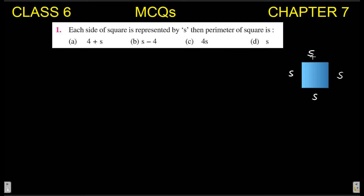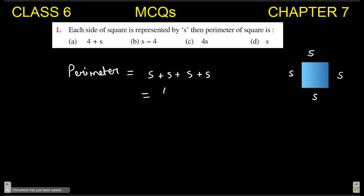So the perimeter of the square equals s + s + s + s, which gives 4s. This is the perimeter. The option that has 4s is option C, so option C is your answer.